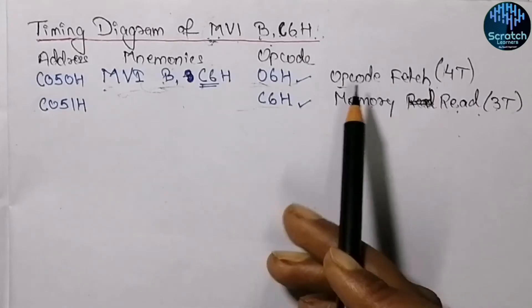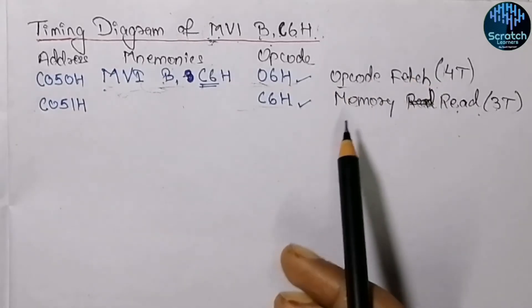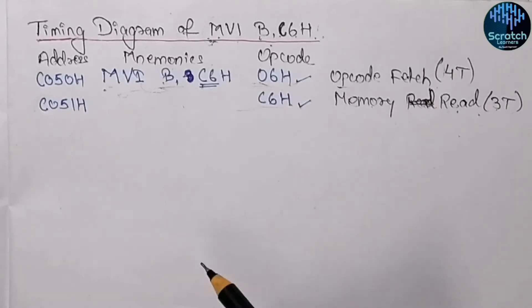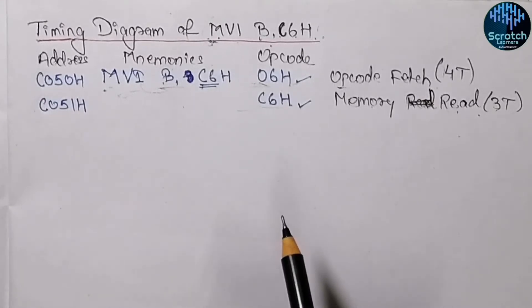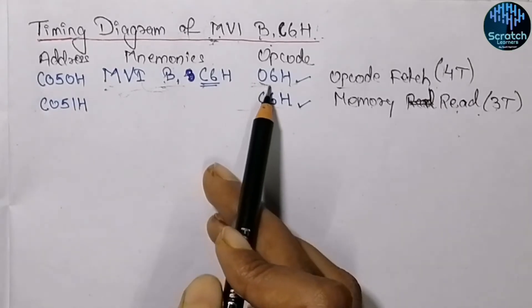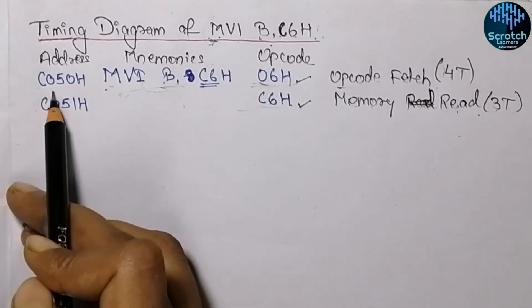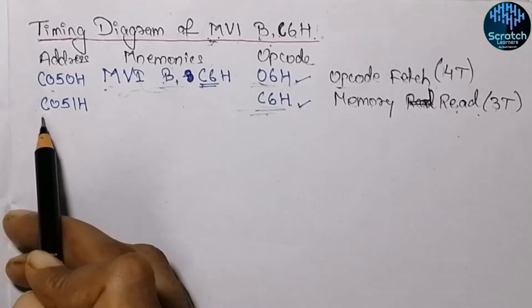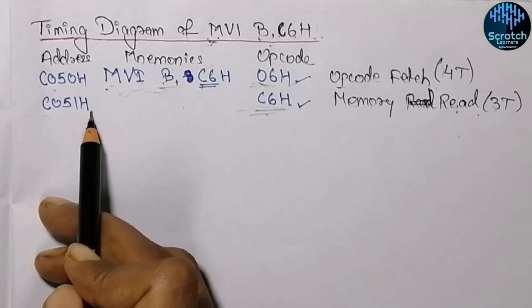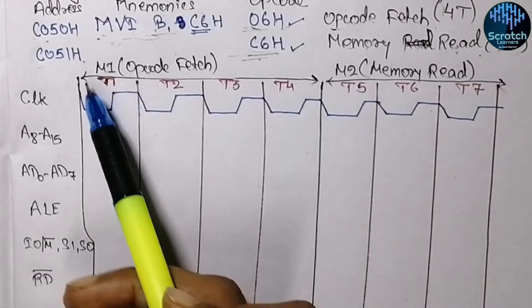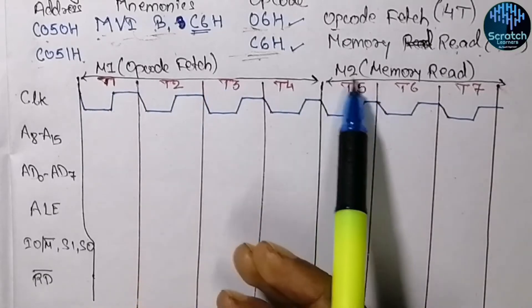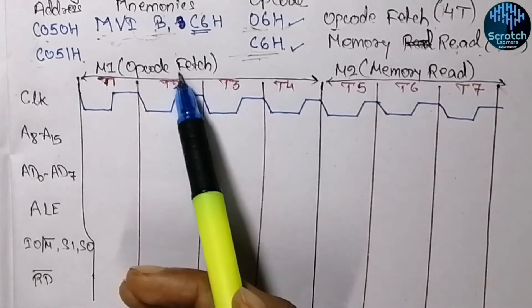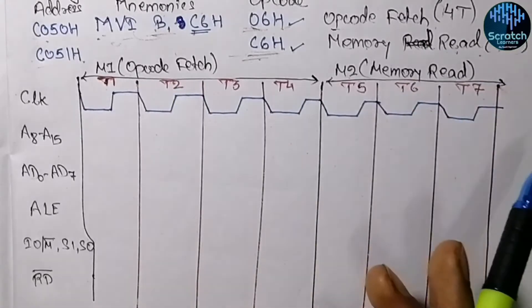If you have any problem understanding the opcode fetch and memory read cycles, you can watch those videos by getting the link from the i-button. Now we will be drawing the timing diagram of the MVI instruction, where opcode 06H is fetched from memory location C050H and the operand C6H will be fetched from address C051H. There are two machine cycles: M1 is for the opcode fetch and M2 is for the memory read, with four T-states in the opcode fetch and three T-states in the memory read.